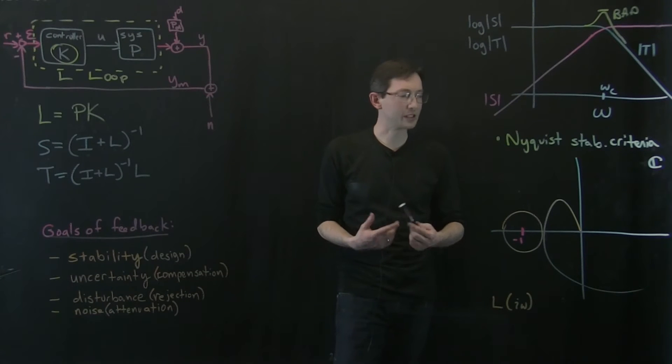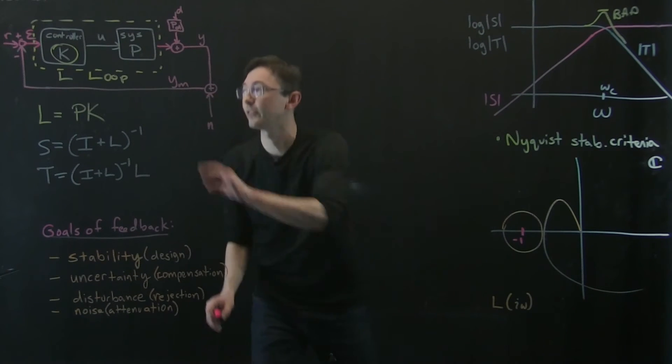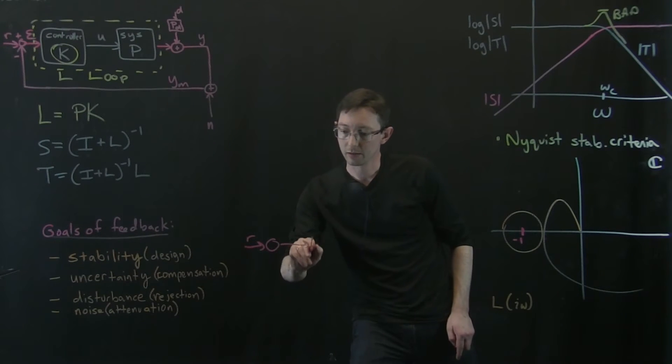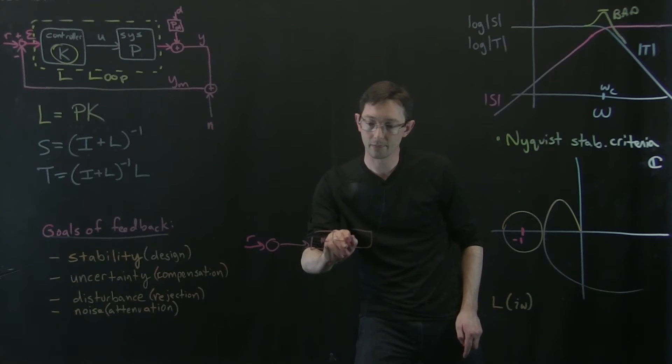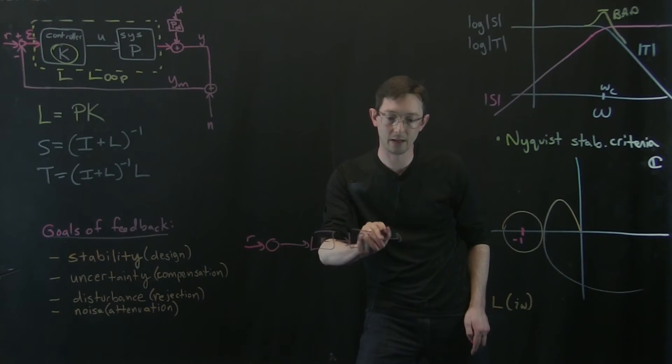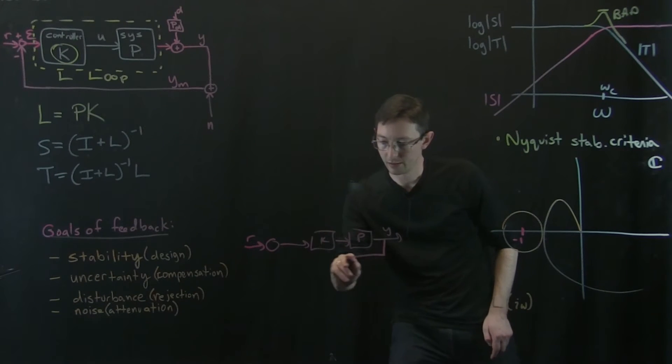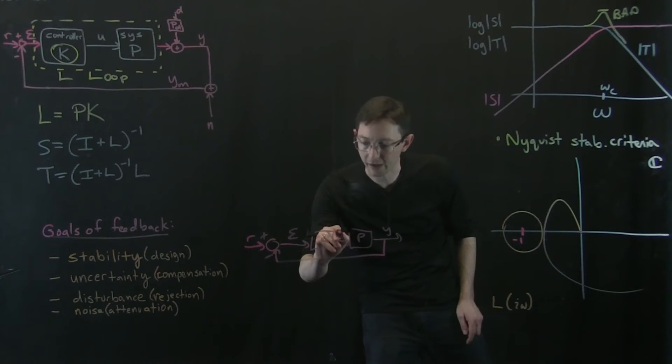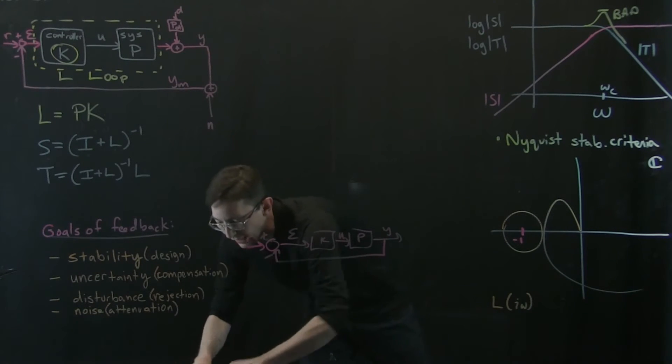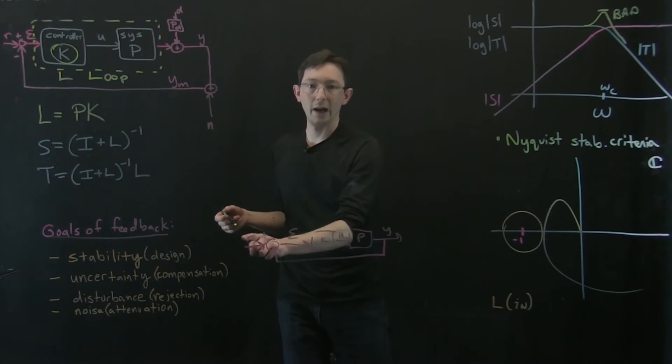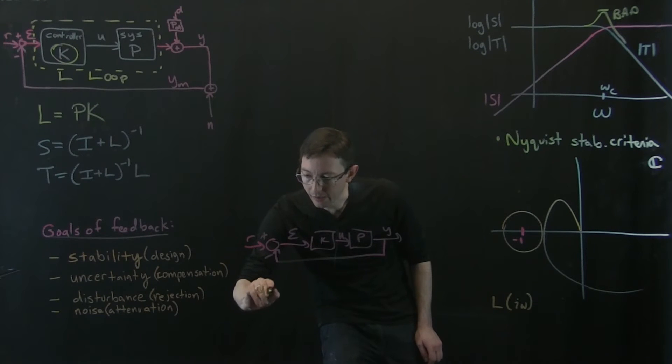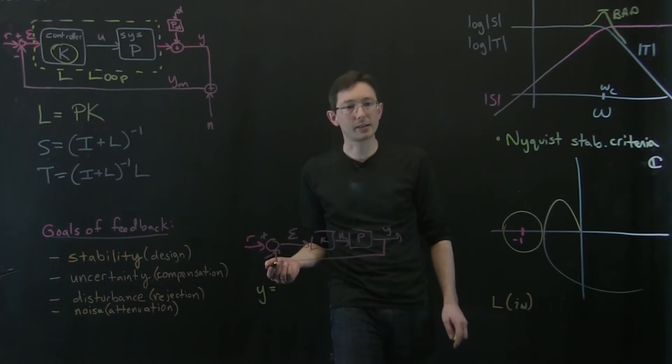Now, why is this negative one point so special? We can draw kind of a simplified version of this diagram where we just have reference, controller, plant, and y. It's a little faint. And if I subtract that, I get my little epsilon and I have my u. And so the idea is I can write my transfer function y to r. I can write this as y equals, and I think it's something like